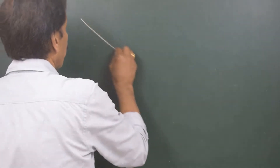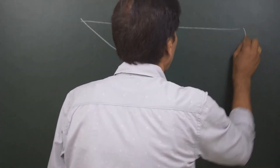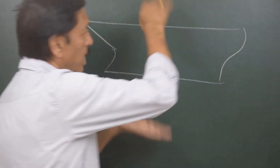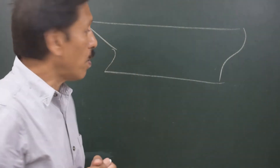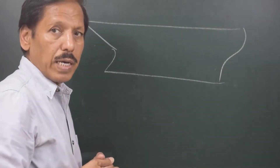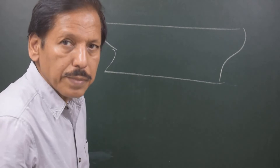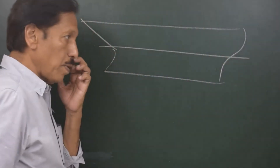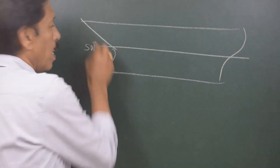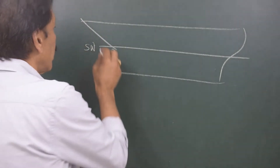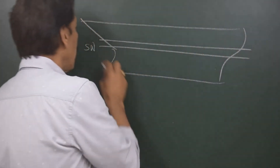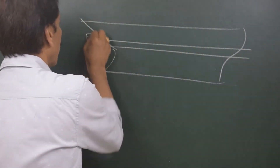Now let us say the ship initially was in salt water. This is the initial water level, say for example in salt water, and the mean water level in fresh water would be higher. So this is the first density and this is the second density as the ship goes.